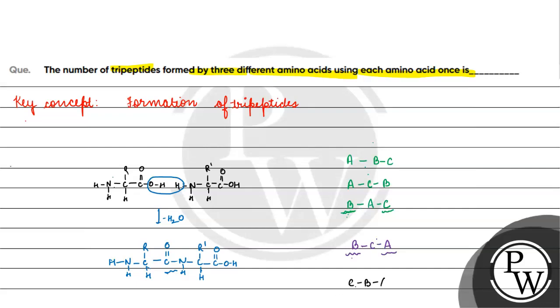फिर C-B-A combination possible है, C का N-terminal और A का C-terminal हो। Or last possibility जो हमारे पास होती है.